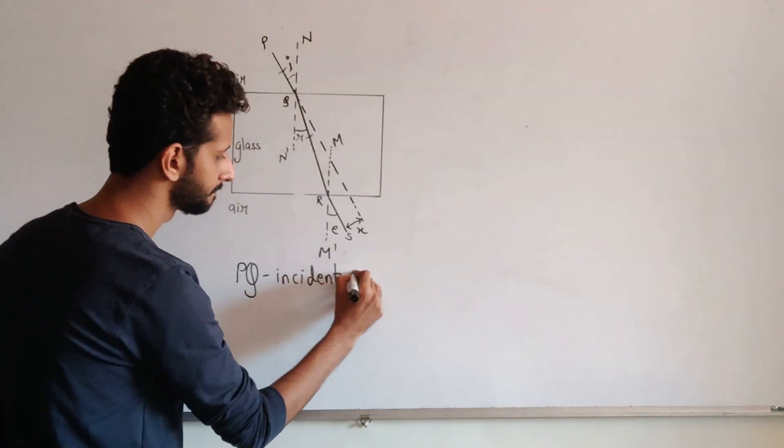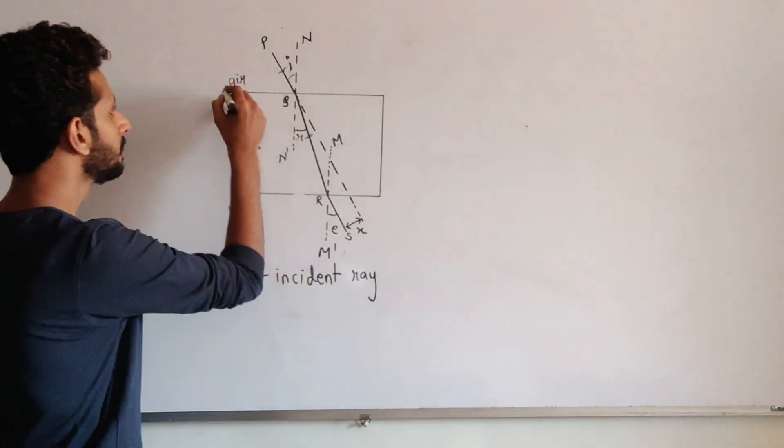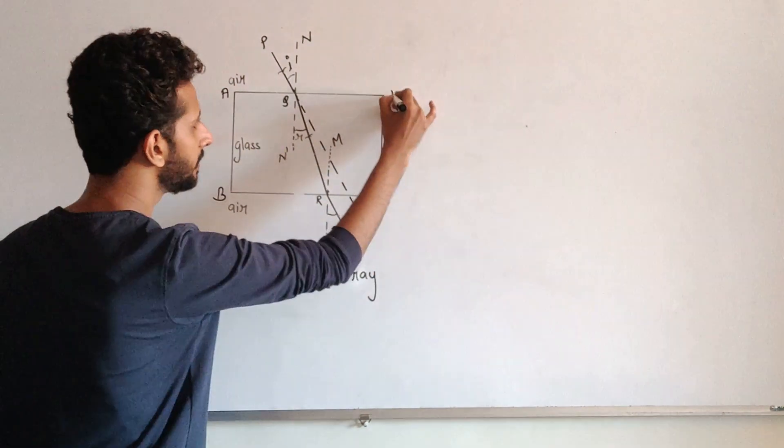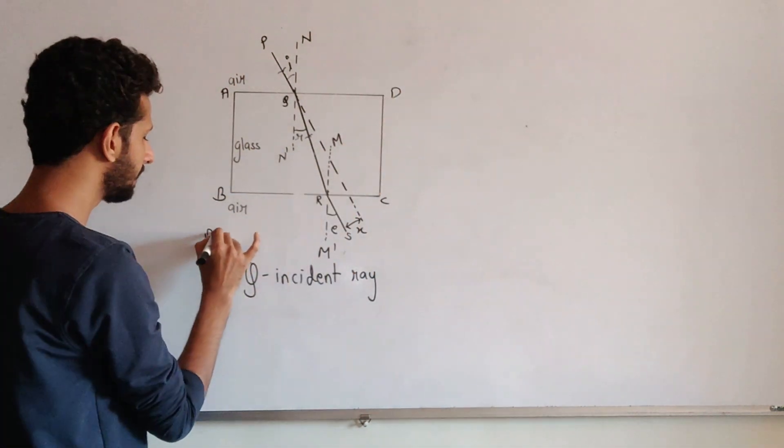So PQ is our incident ray. The glass slab is ABCD is our glass slab.